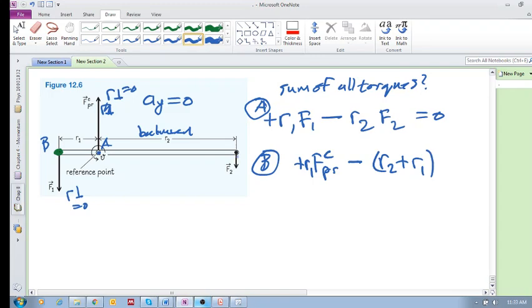This guy's new lever arm is this entire distance, so you have to add R1 plus R2 - that's the entire lever arm. And we know that this should equal zero because it's still in equilibrium.